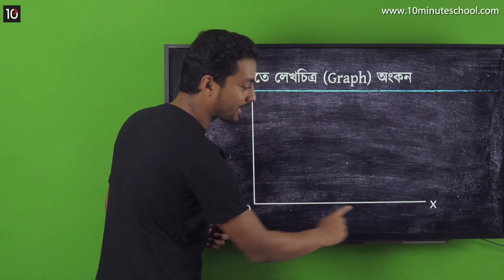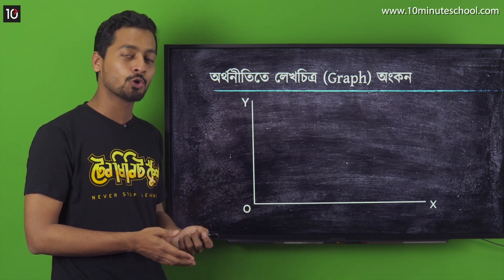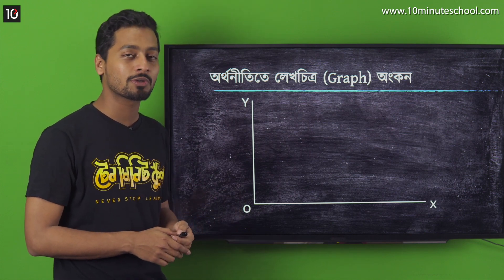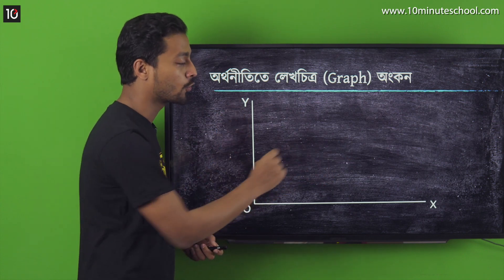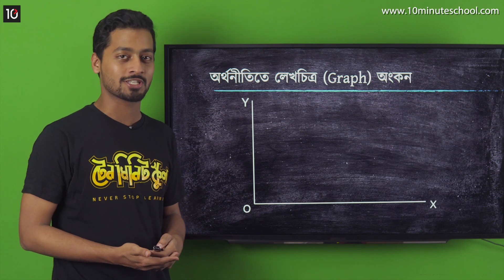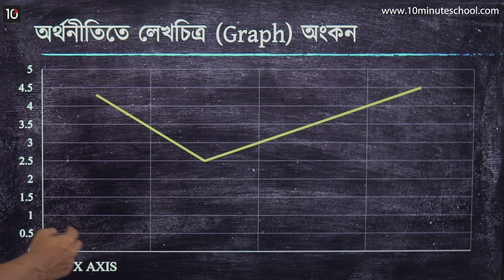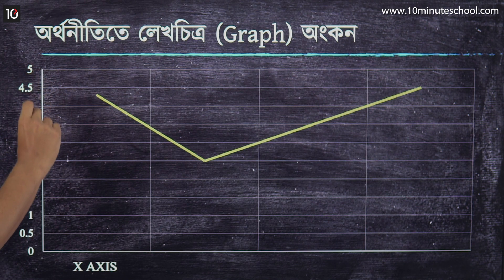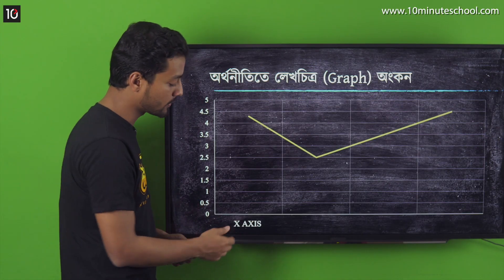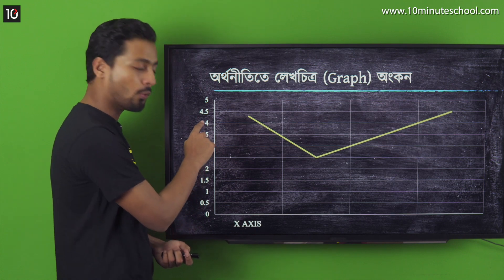We can see that O, X is the X axis, and O, Y is the Y axis. We can see that the Y axis is very important to note in this graph.